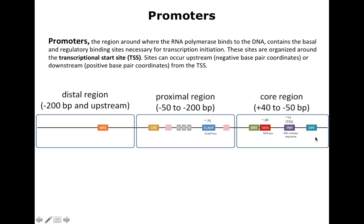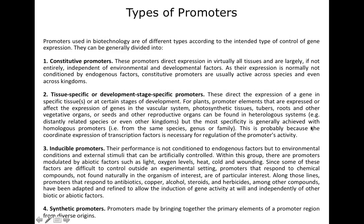Some genes lack a TATA box but can still be transcribed because of the downstream promoter element (DPE). Genes can have a TATA box, a DPE, or both. There is also the B recognition element (BRE). TAF6 and TAF9 bind to the downstream promoter element, while TATA binding protein is associated with the TATA box. TF2D lands on the promoter with TBP and its associated factors.